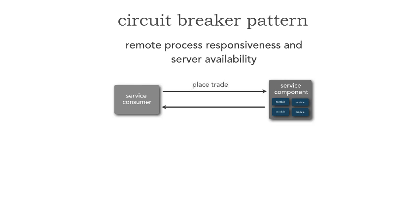Let's say that we're placing a trade. I'm invoking a place trade operation on this particular microservice — I'm going to buy a hundred shares of Apple stock, let's say. On average, that comes back in 2,000 milliseconds. Now I need some sort of timeout value anytime I do a remote call. A lot of times we just make up a number — well, let's just double the average or something. But here's the problem with making up a number: I don't want to time out that transaction right when the service has already placed that trade and is just about to hand me back a confirmation ID, and I time out. So my view of the world is that it was a failed transaction.